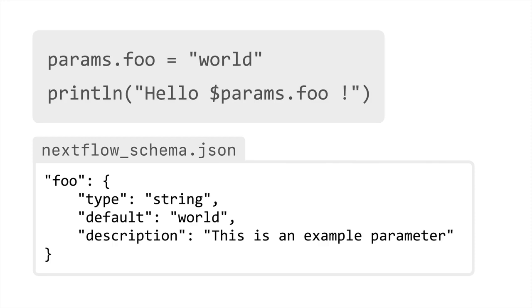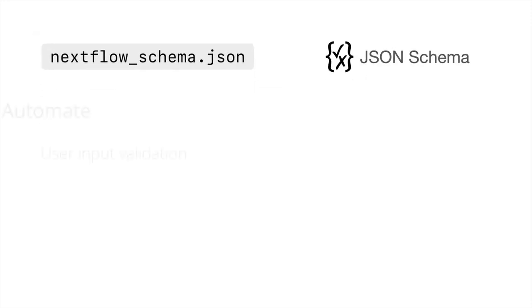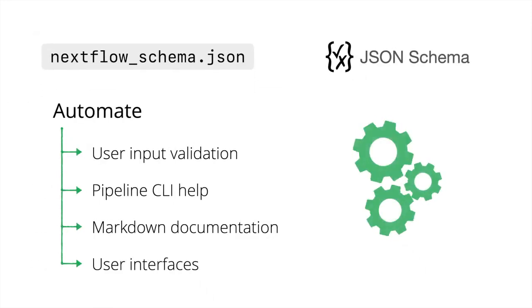We're adding a new file to our NFCore pipelines to describe these parameters, give extra metadata such as their type, description, and help text. This allows us to automate a large number of things around the pipeline: validate user inputs when people run pipelines, but also build help and documentation as well as user interfaces.